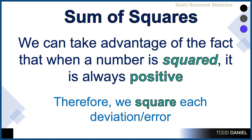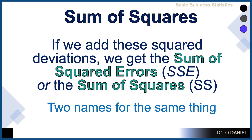Deviation scores are also called error scores. When we add up the squared deviations, we have a sum of squares. This sum of squares is also sometimes called the sum of squared errors — two terms for exactly the same thing.